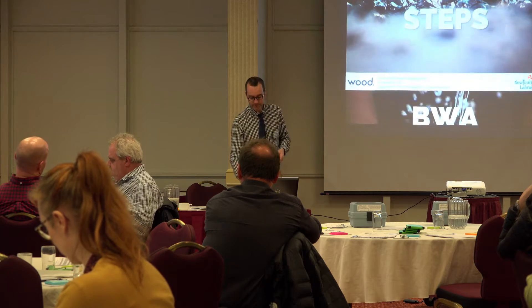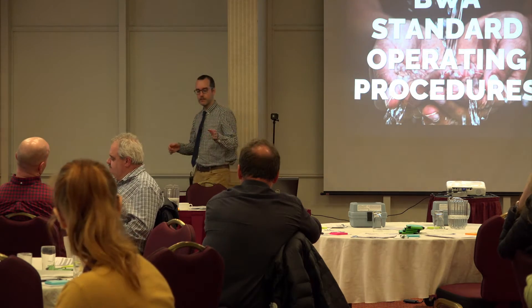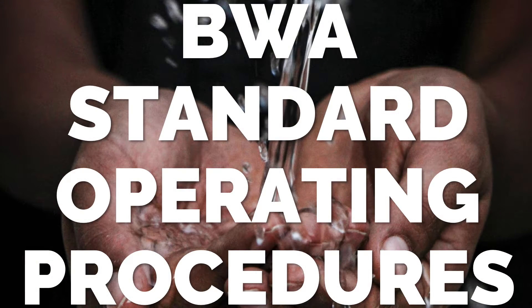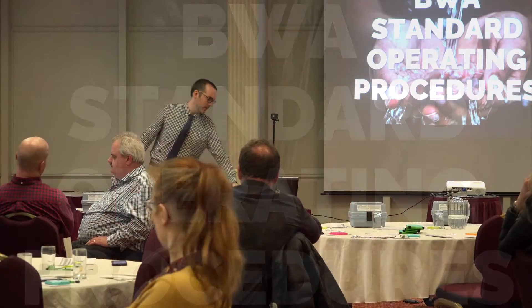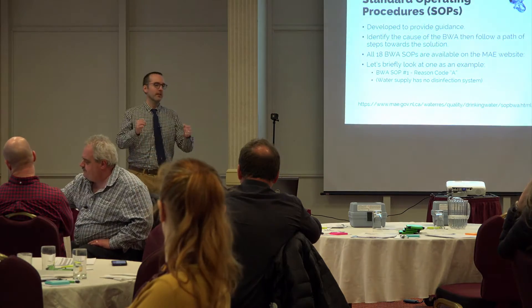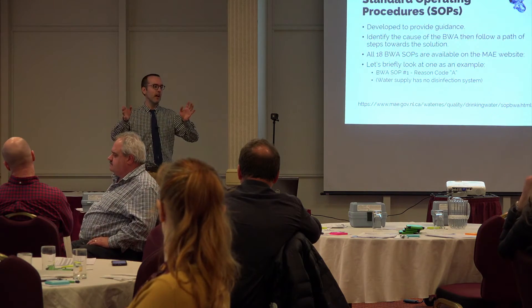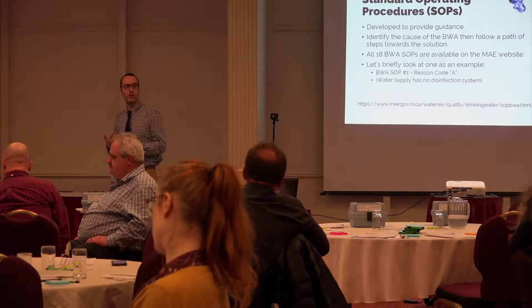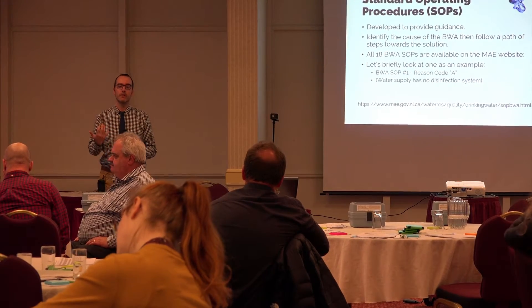With that in mind, Municipal Affairs and Environment have come up with these standard operating procedures. There should be one on every table — it's a bigger, wider sheet with a lot of information on it. There are 18 of these different sheets, 18 unique standard operating procedures that all kind of follow the same process. We're going to look at one as an example.